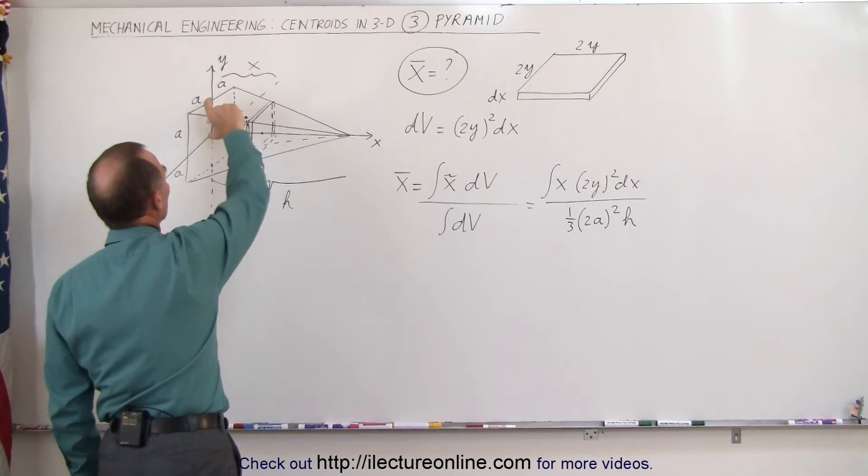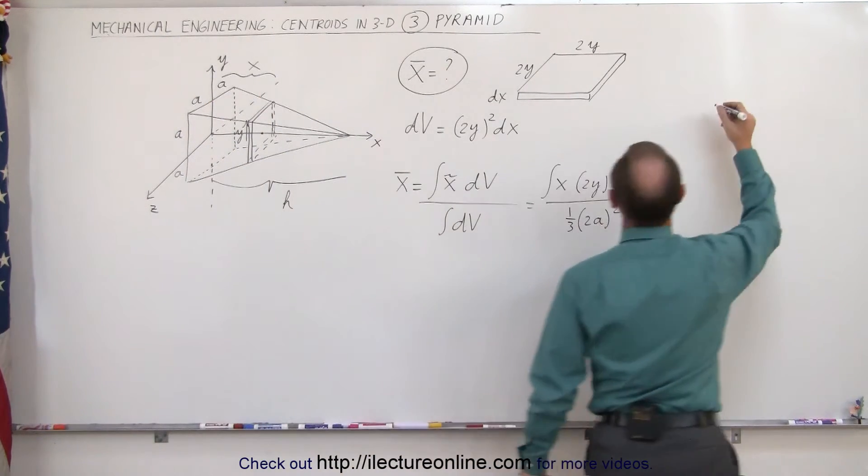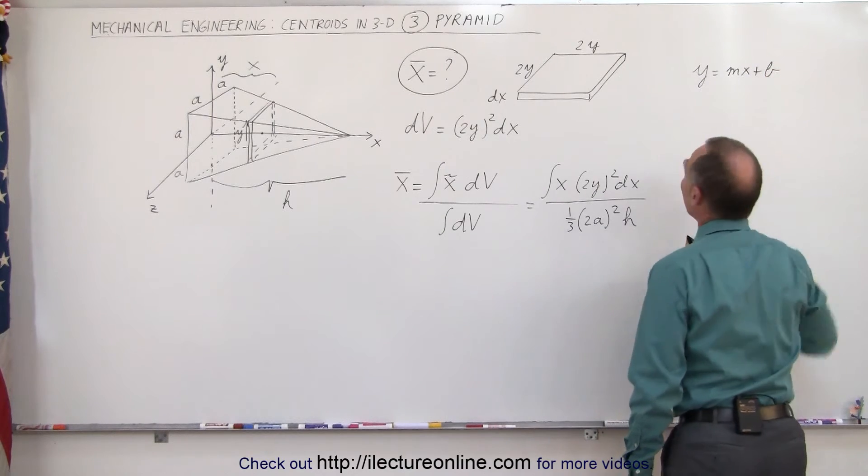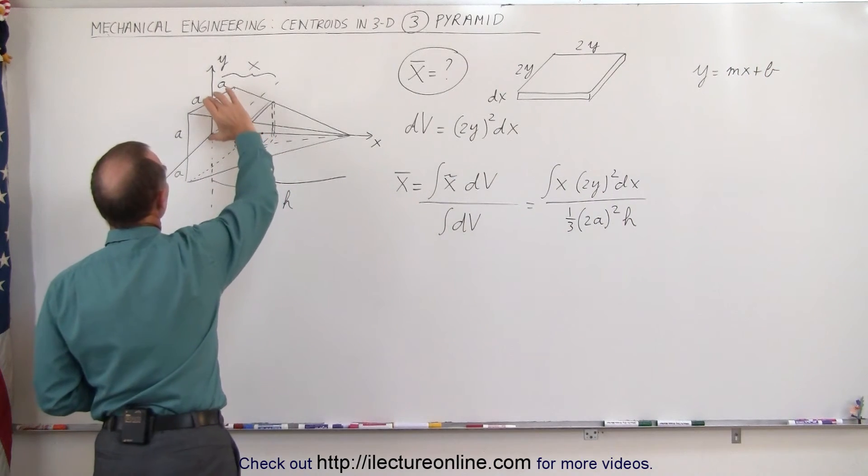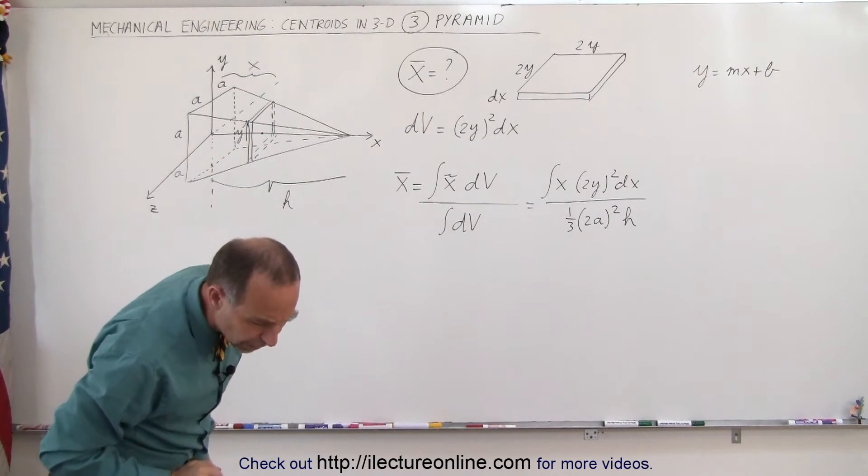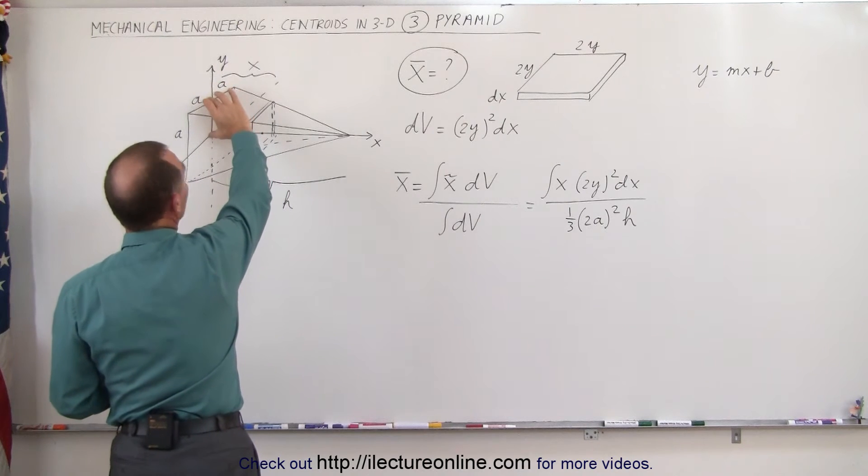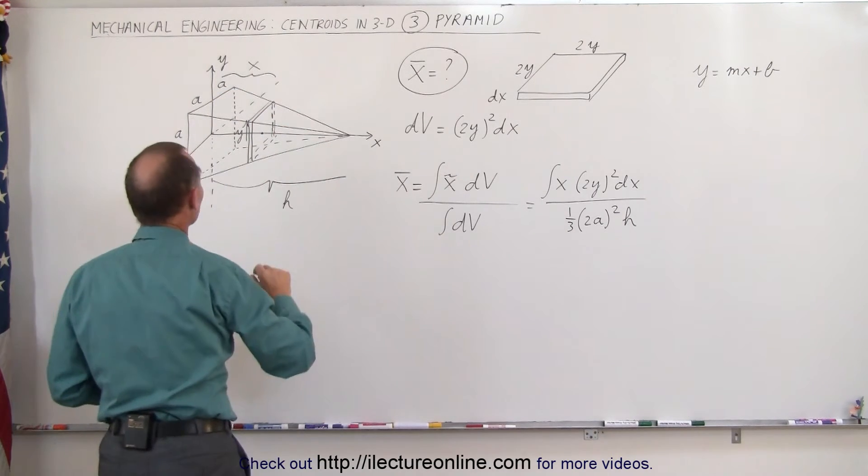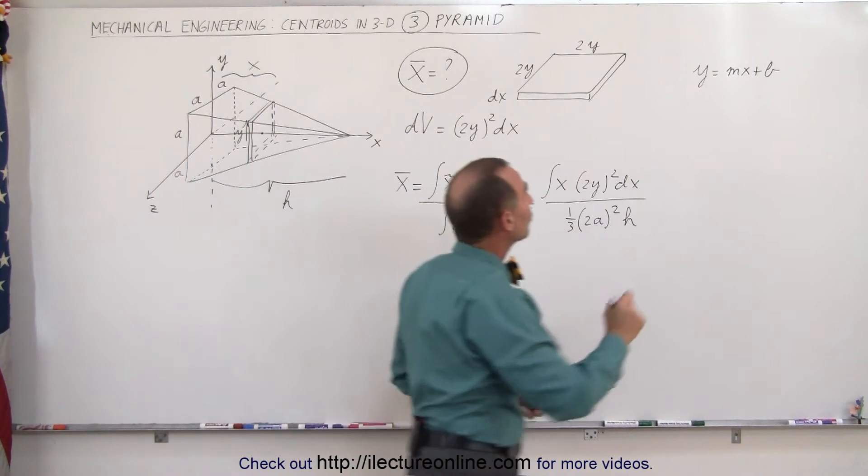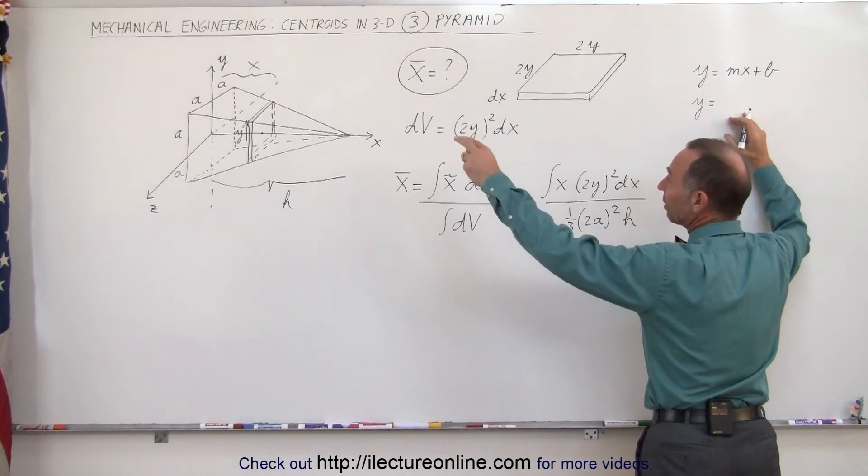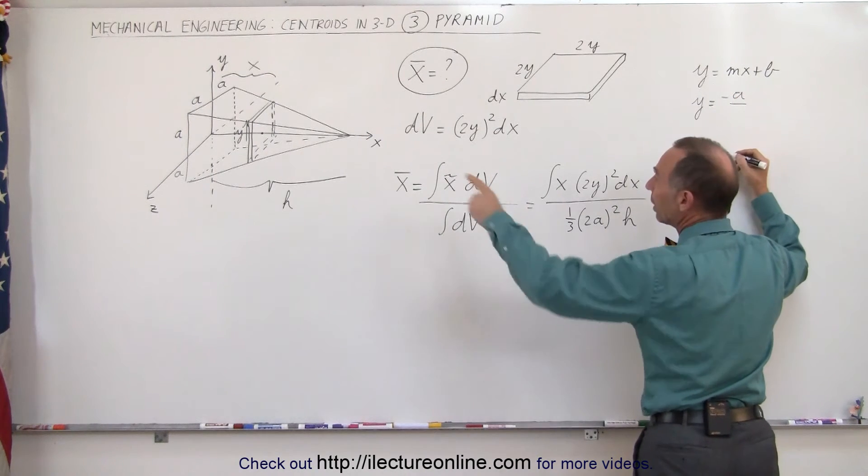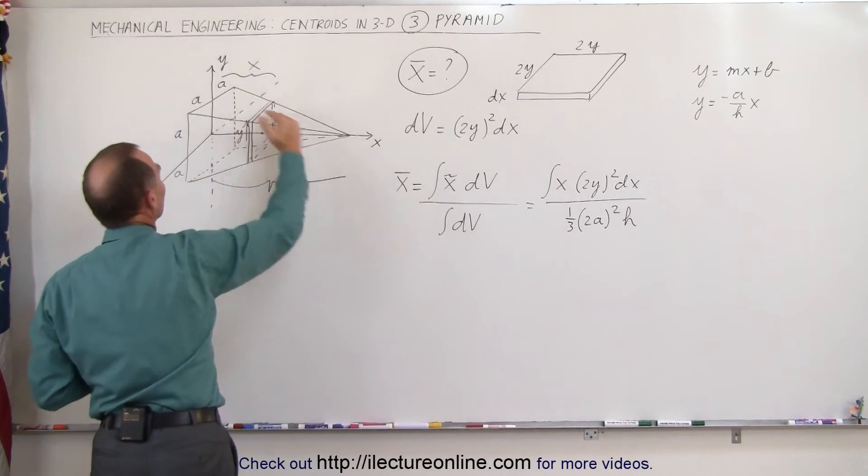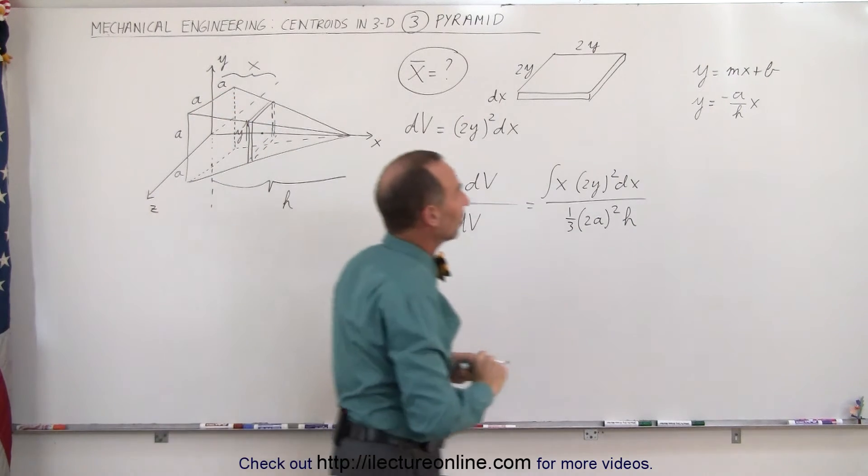Here we have a relationship between y and x. The slope can be found as y equals mx plus b. We can see that the height here is a, and the run is h. To find the slope, y is equal to the rise over the run, but in this case, instead of a rise, we have a drop. The drop is a, and the run is h times x plus b. We do have a b. The intercept of b is equal to a when x is equal to 0, so that would be plus a.